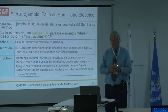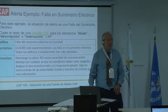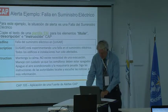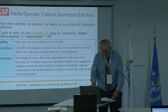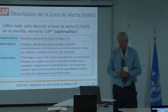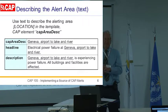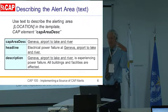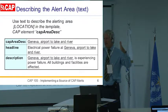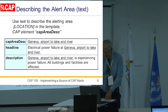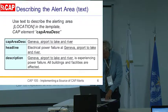Here we have a headline from that template that says 'electrical power failure at,' then we fill in the location. The description will be: a location is experiencing power failure, all buildings and facilities are affected. The area description in my chosen example is Geneva, airport to lake and river — that's the whole northern sector. We stick that into the area description, and you have the area description, headline, and instruction right out of the template.